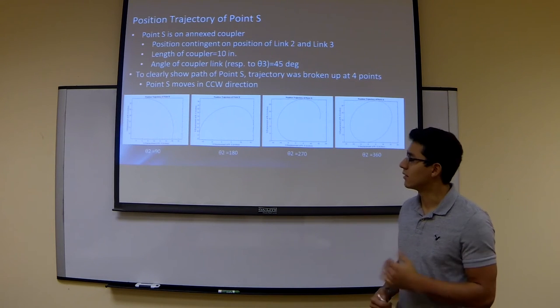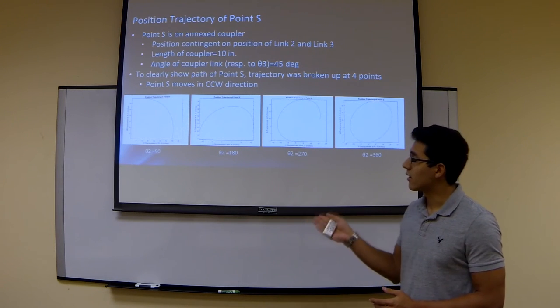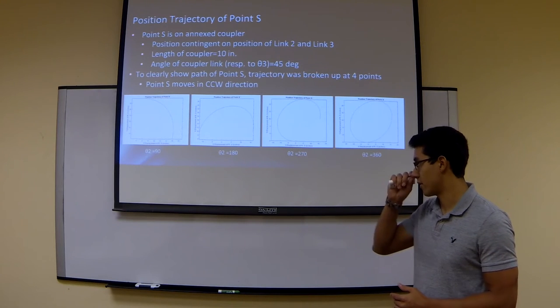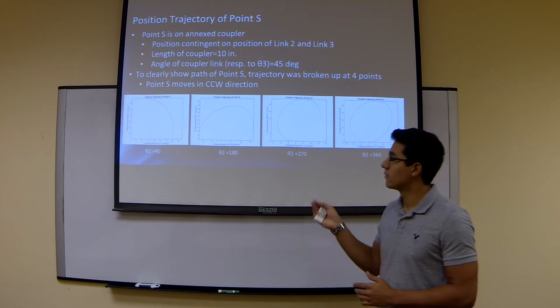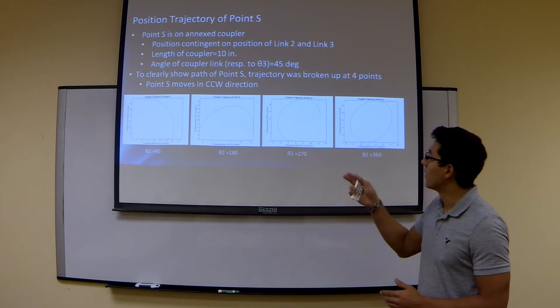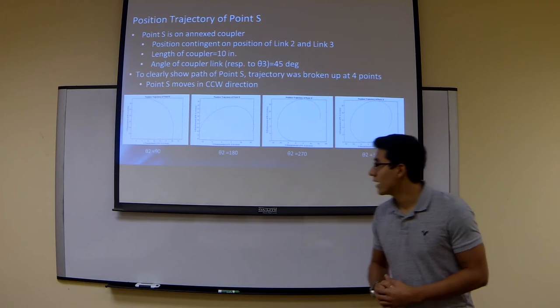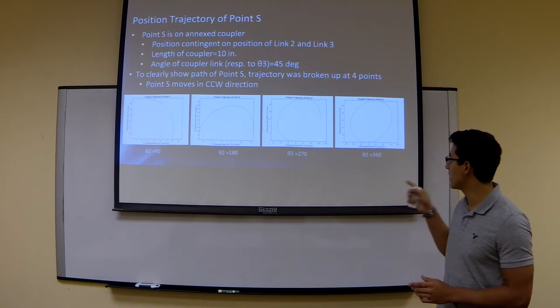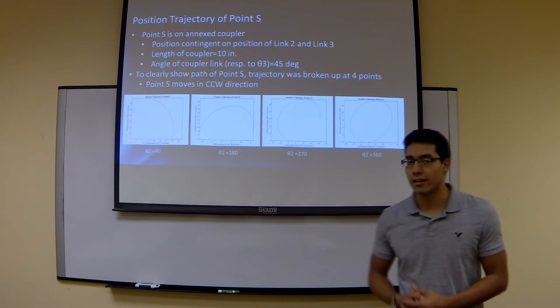As we can see here in the four plots, when theta 2 is displaced 90 degrees, you see a counterclockwise trajectory of the point. If we look at theta 2 equal to 180, it moves even further down, and we can see how it forms a sort of egg-like shape.